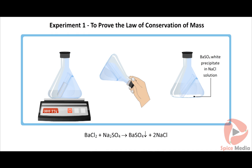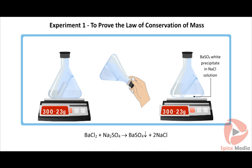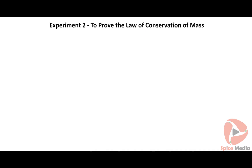You can see that barium chloride reacts with sodium sulfate to give a white precipitate of barium sulfate and sodium chloride. Weigh the whole apparatus again — you will be surprised to see that there is no change in weight before and after the reaction. Try the experiment in your laboratory.